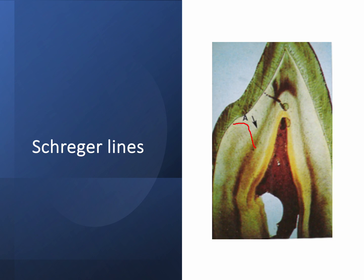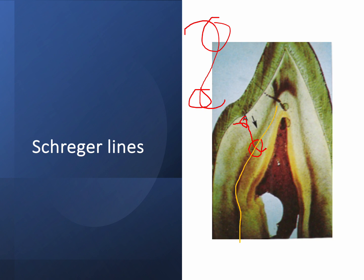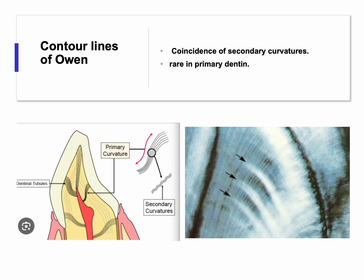Remember the S-shape curvature — it has a concavity and a convexity. The convexity and concavity of this S-shape are demarcated by a line, as you can see here. This is the line that demarcates the S-shape beside the root. The Schreger line shows us the maximum concavity and the maximum convexity of the S-shape of the primary curvature.